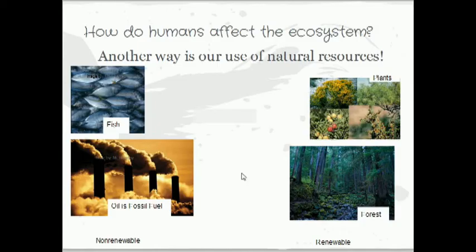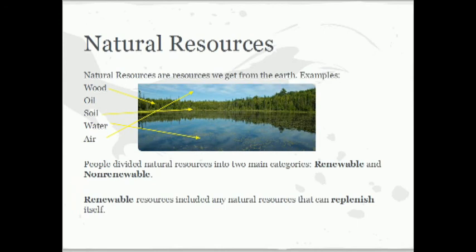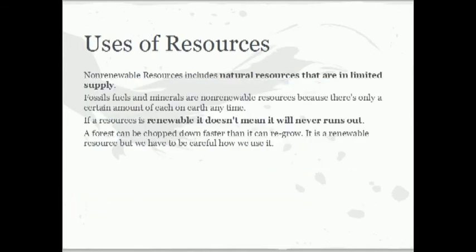Here are some examples of non-renewable and renewable natural resources. Natural resources are resources we get from the Earth — for example, wood, oil, soil, water, and air. These resources are divided into two main categories: renewable and non-renewable. Renewable resources include many natural resources that can replenish themselves. Non-renewable resources include natural resources that are in limited supplies. Fossil fuels and minerals are non-renewable resources. If a resource is renewable, it doesn't mean it never runs out — for example, a forest can be chopped down faster than it can be grown.